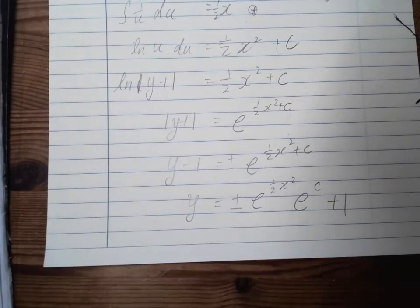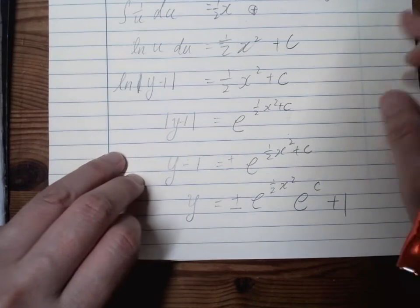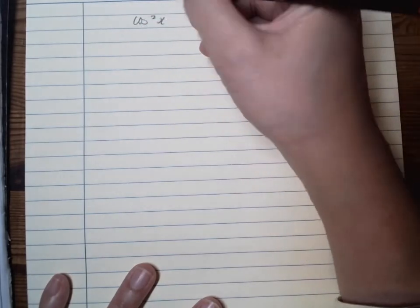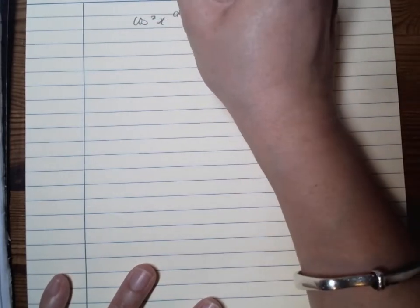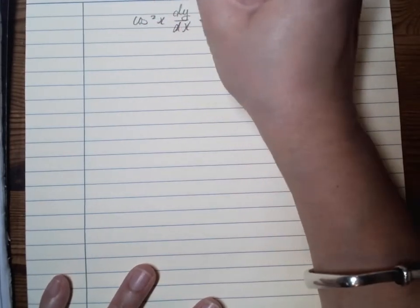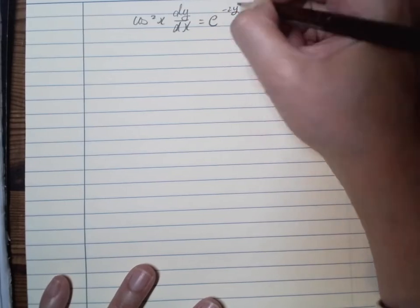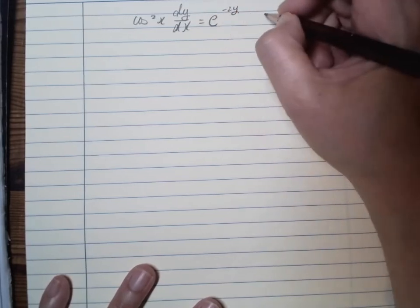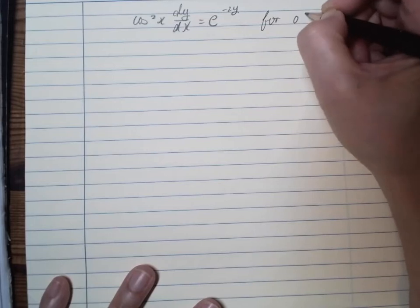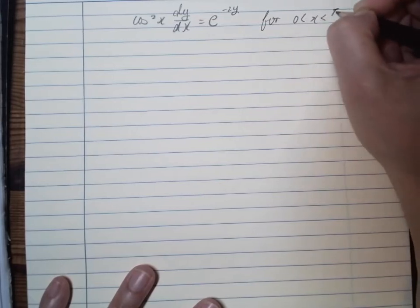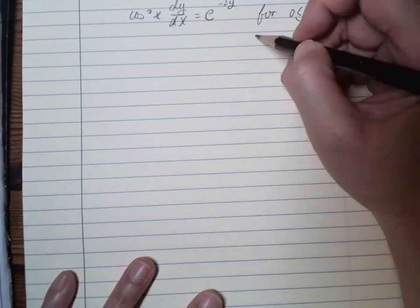Sometimes a longer question will give you an initial value. Let's do one more. We have cos(x) times cos(2x) times dy/dx equals e^(negative 2y), for 0 less than x less than pi over 2 — that's a 90 degree domain.